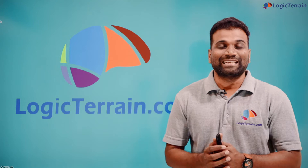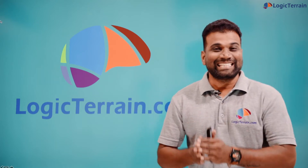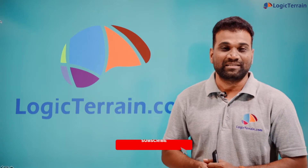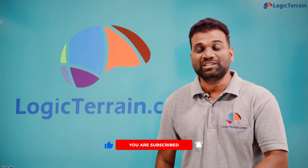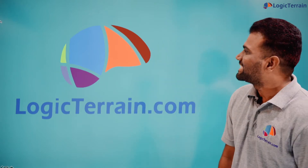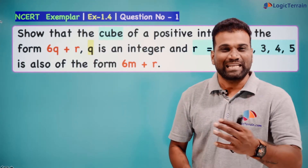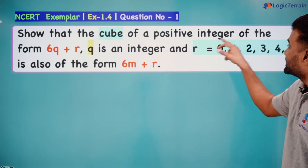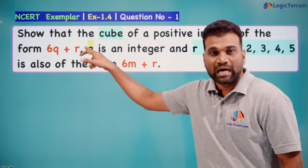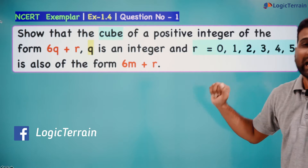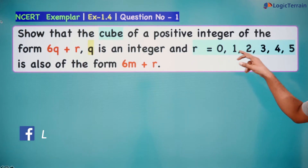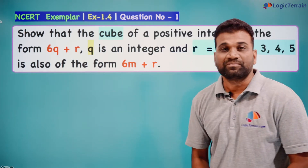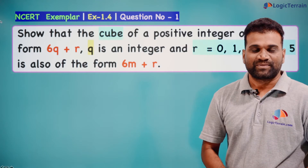Hello everyone, welcome to Logic Terrain. In this session we are going to discuss one of the very important questions from NCERT Exemplar from the chapter Real Numbers of Class 10. The question is: show that the cube of a positive integer of the form 6q + r, where q is an integer and r equals 0, 1, 2, 3, 4, or 5, is also of the form 6m + r.